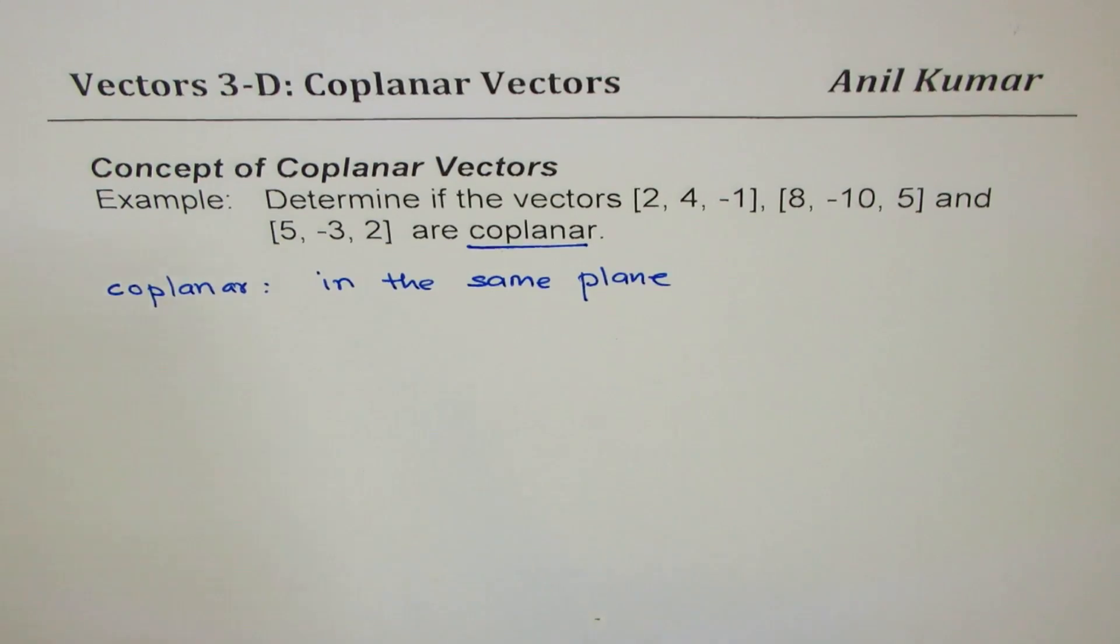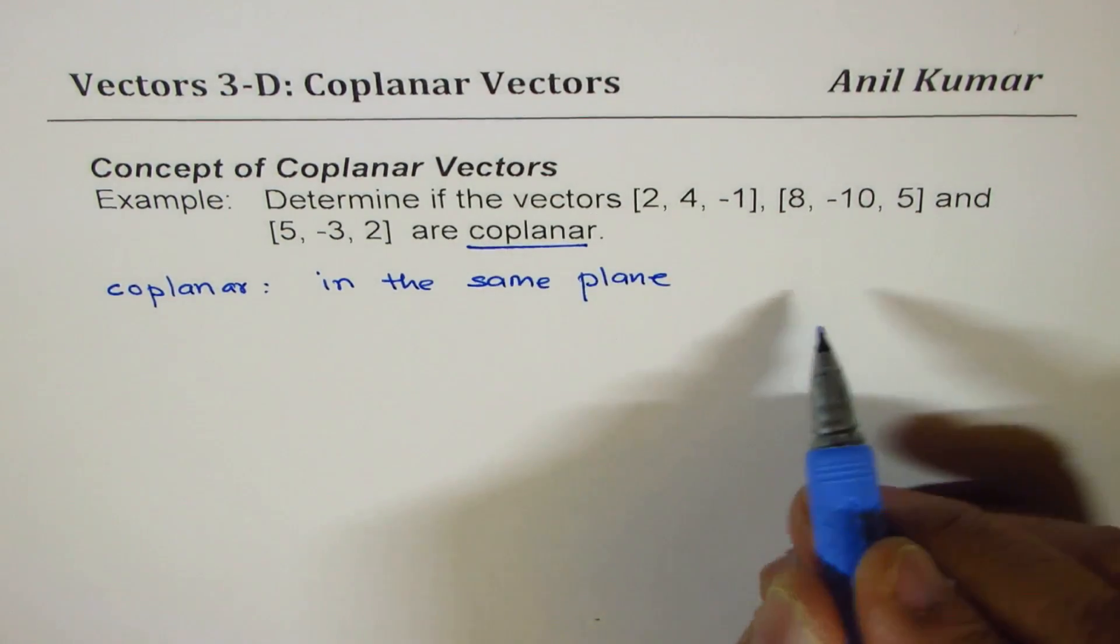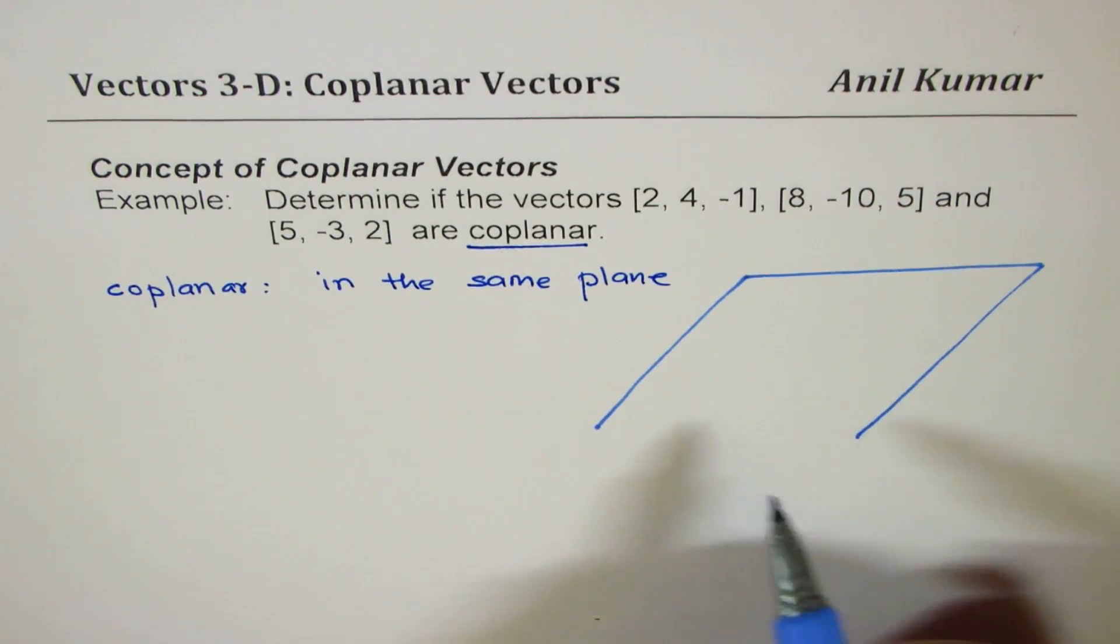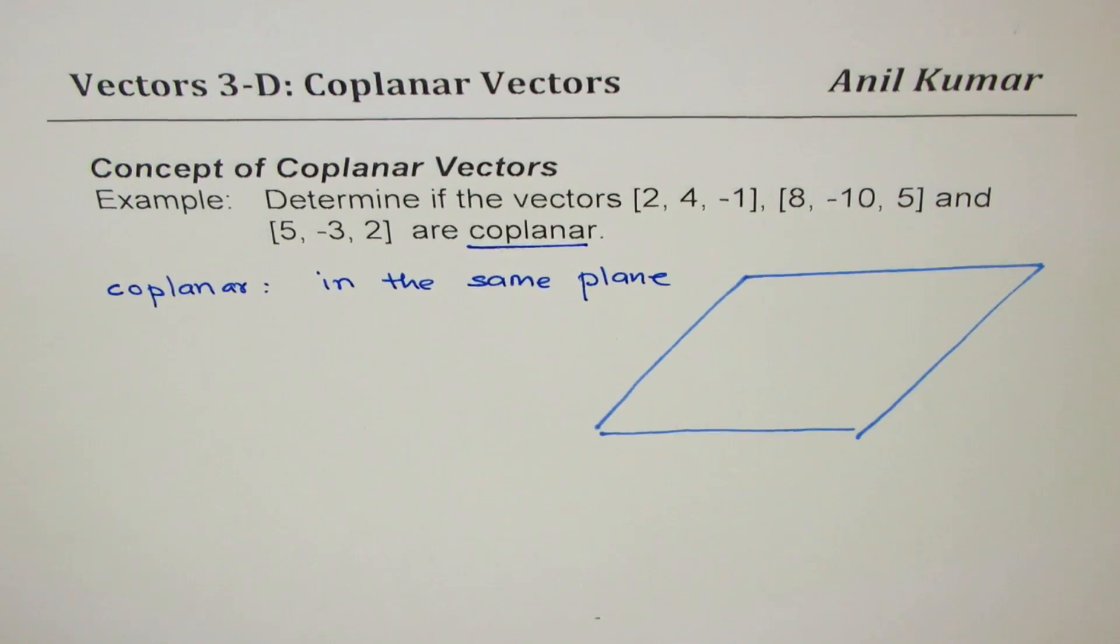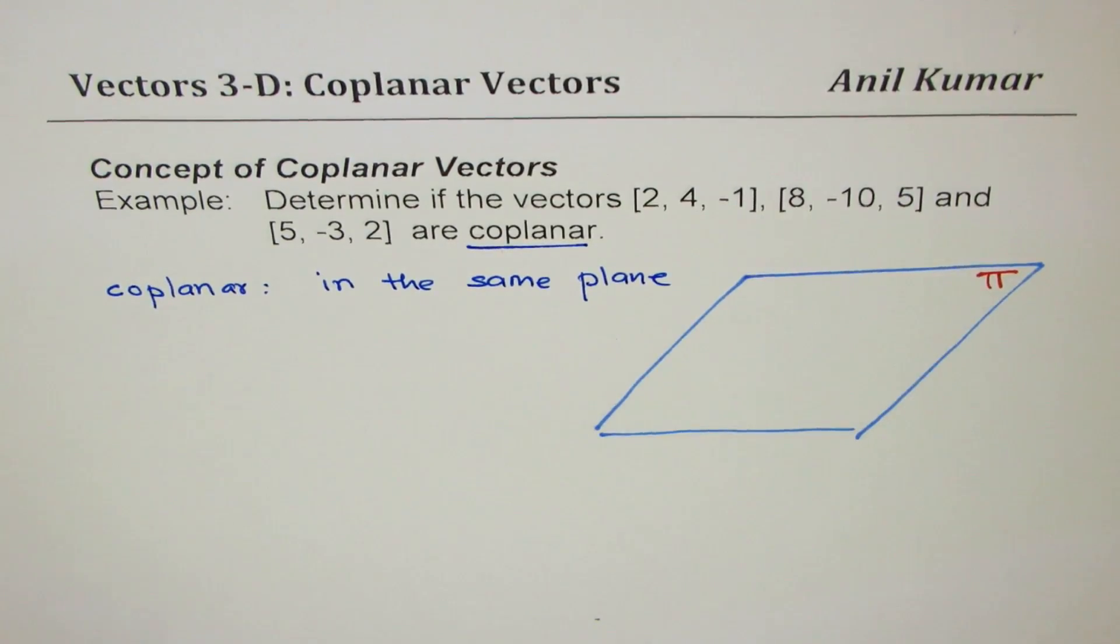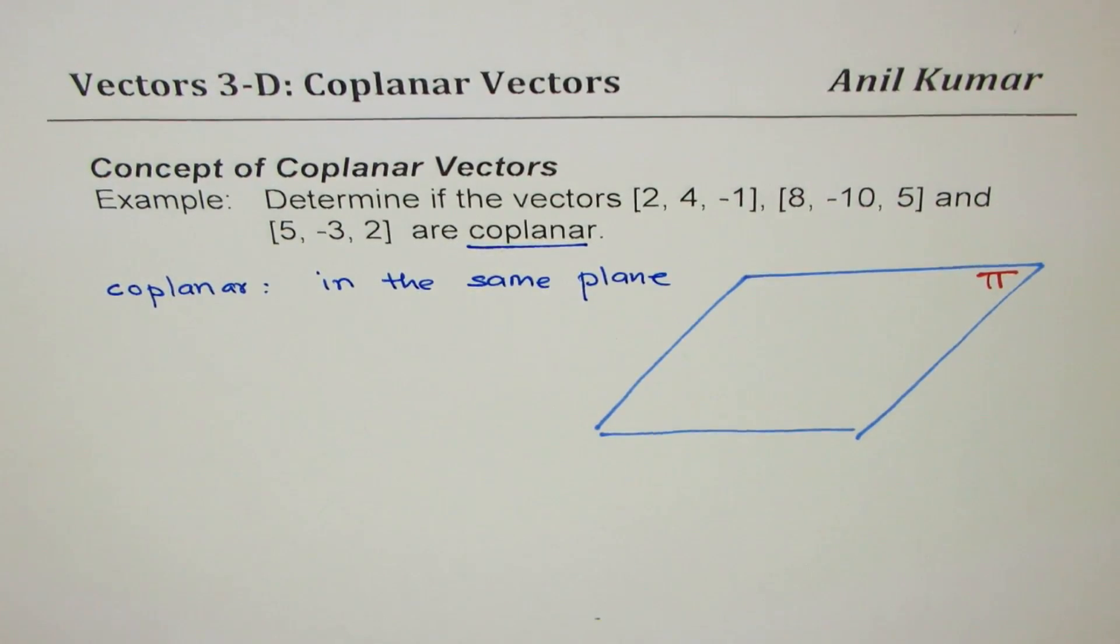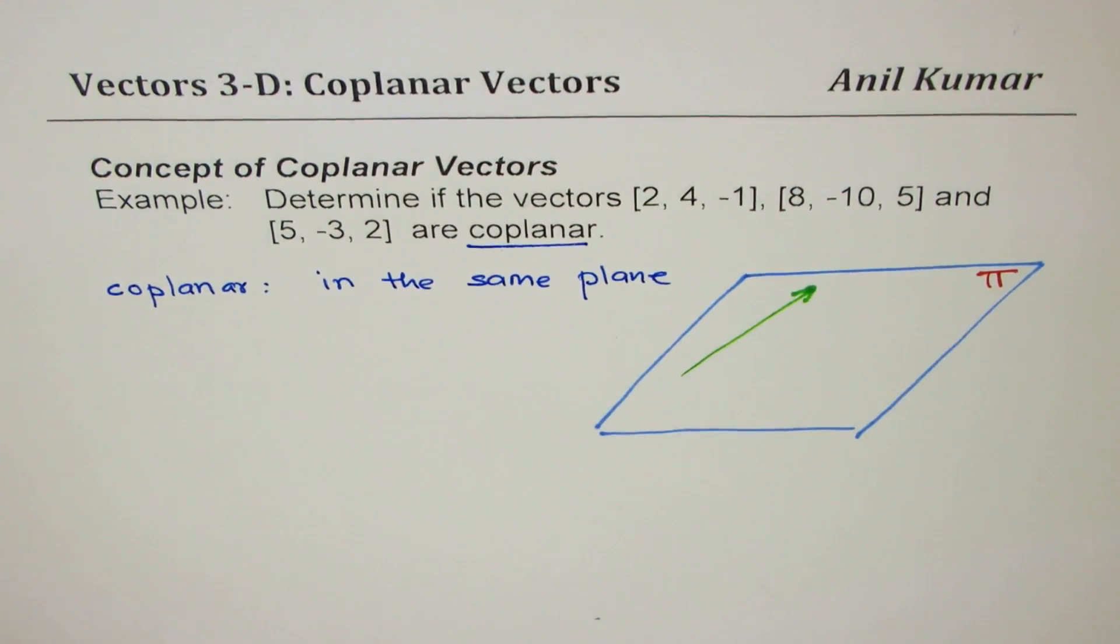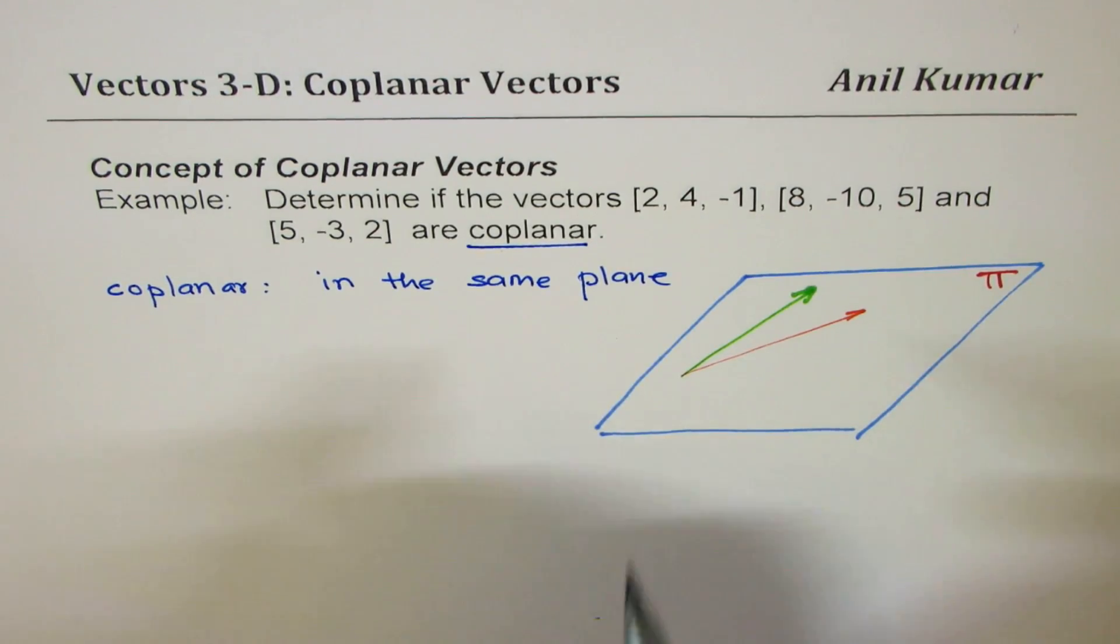Now, let us say that these three vectors are coplanar. If they are coplanar, the three of them could be represented on this plane, that's the plane of this paper. We normally give the name of a plane by π, which is very commonly used for naming planes.